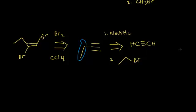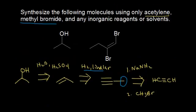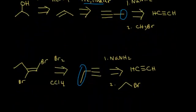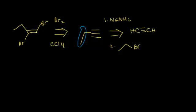You might think you're done with your synthesis, but in reality you are not. If you go back and read the question, it says synthesize the following molecules using only acetylene or methyl bromide — not ethyl bromide. So you actually can't use ethyl bromide as a starting material. You need to figure out a way to make ethyl bromide. Ethyl bromide contains two carbons, so let's think about how to make ethyl bromide from acetylene.